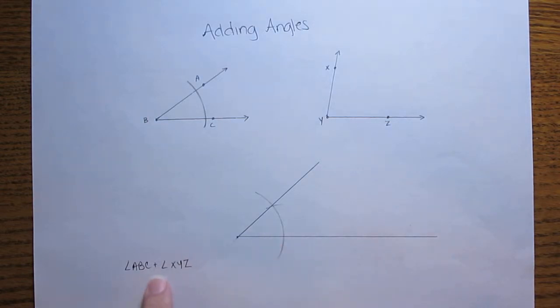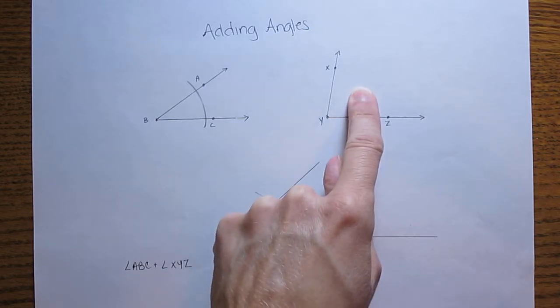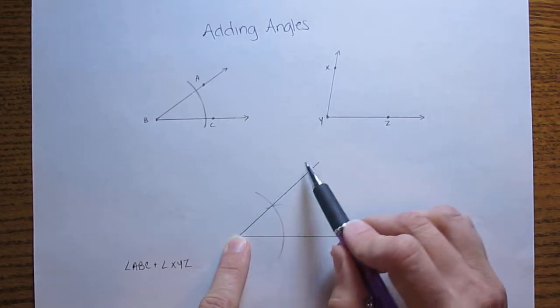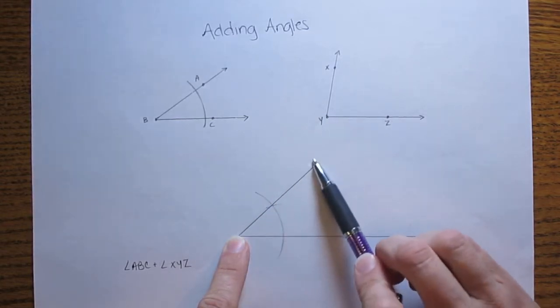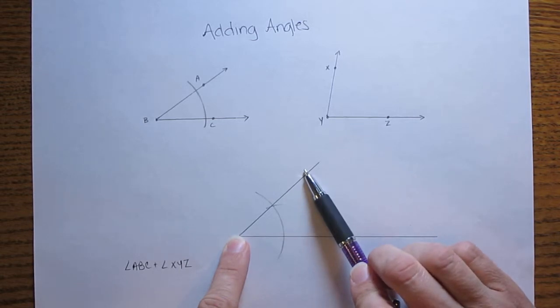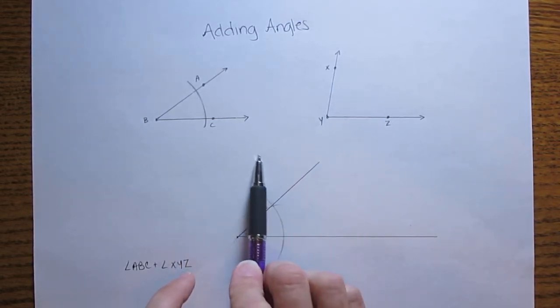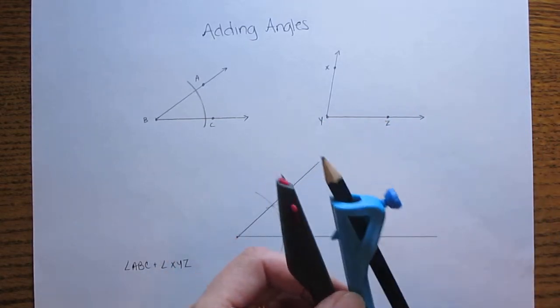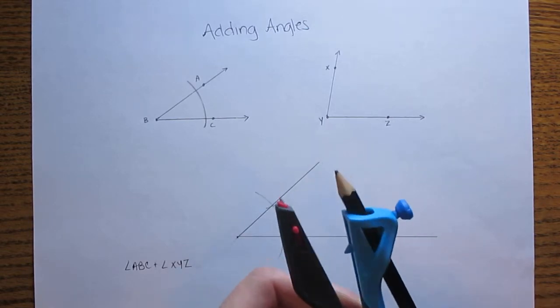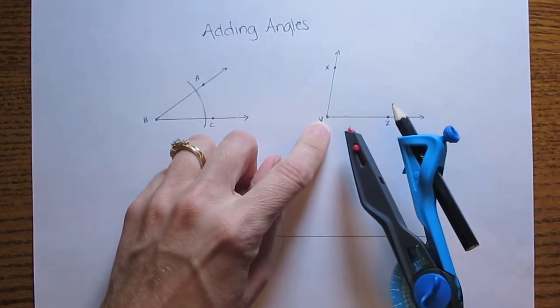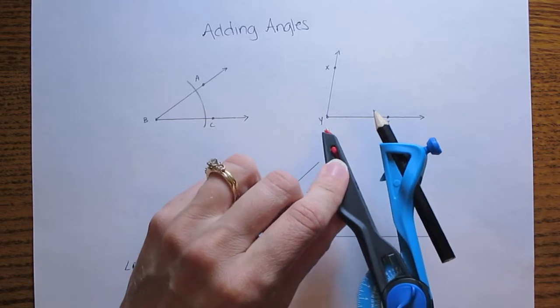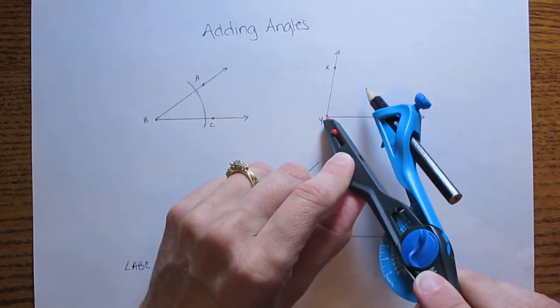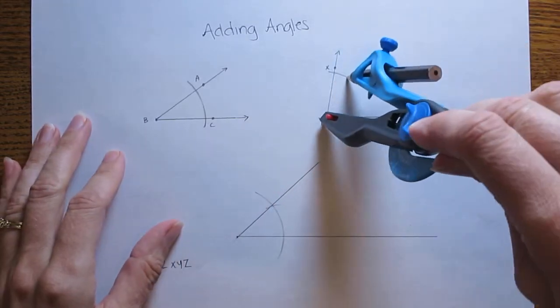Now to add the two angles together I'm going to copy angle XYZ onto this new segment. This will be the segment that I'm starting with and I will copy this angle onto it in this direction. So back to my compass. Open it to any width because to start the copying of the angle process it's always the same. We're going to put the pointed end on the vertex of the angle we're going to copy and we're going to make an arc through that angle.